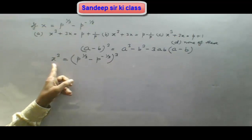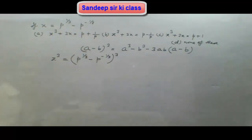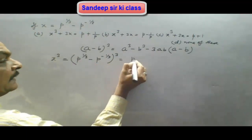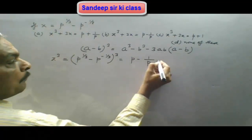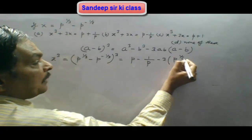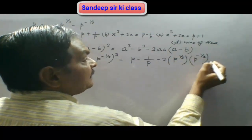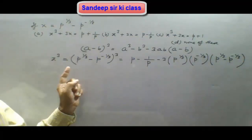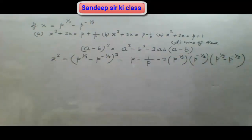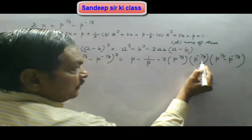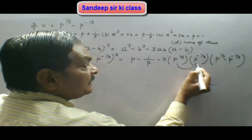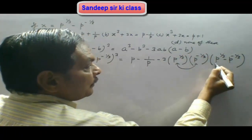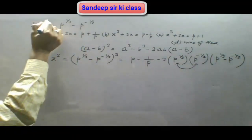We have raised both sides to the power 3. Now we apply the (a minus b)³ formula on the right-hand side. We get p minus 1/p minus 3 times p^(1/3) · p^(-1/3) into (p^(1/3) minus p^(-1/3)). We note that p^(1/3) into p^(-1/3) is 1, and p^(1/3) minus p^(-1/3) can be written as x.